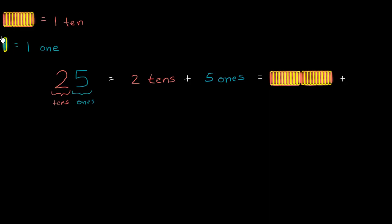Well, if this is a one right over here, and I'm just representing it as one vertical bar, five ones are going to look like - we're going to have one, two... I think you see where this is going.